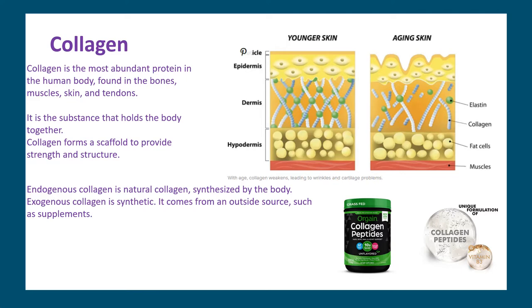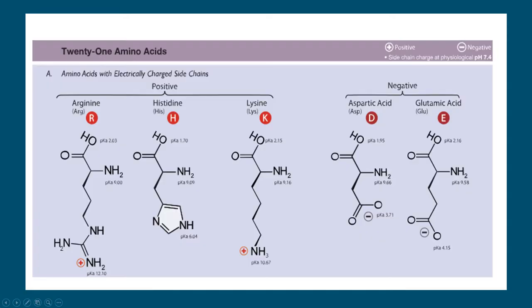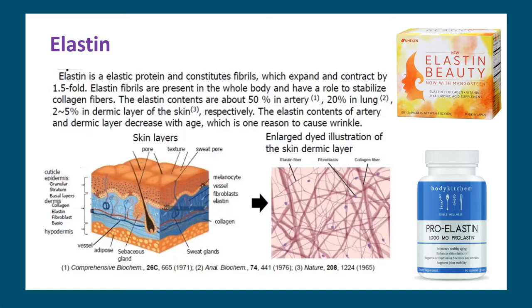With age, wrinkles appear because endogenous collagen — natural collagen synthesized by the body — decreases, while exogenous collagen is synthetic, coming from outside sources such as supplements. You may have seen advertisements for collagen peptides from different manufacturers. Elastin fibrils are present throughout the body — around 50 percent in arteries, 20 percent in lungs, and 2 to 5 percent in the dermal layer of skin — and can also be taken as supplements.